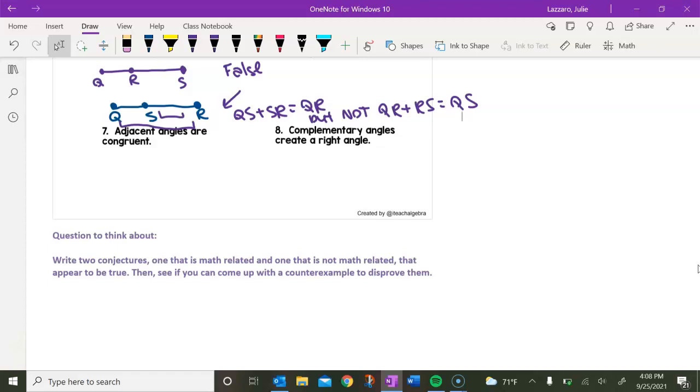Another conjecture you could think about for a non math related answer would be something like this. The weather in September, or the temperature in September is always cooler than the temperature in June. That might appear to be true. You might think September, summer's over, you're getting closer to fall, or the season is fall at the end of the month. Like, okay, that might make sense that the weather in September is cooler than the weather in June.